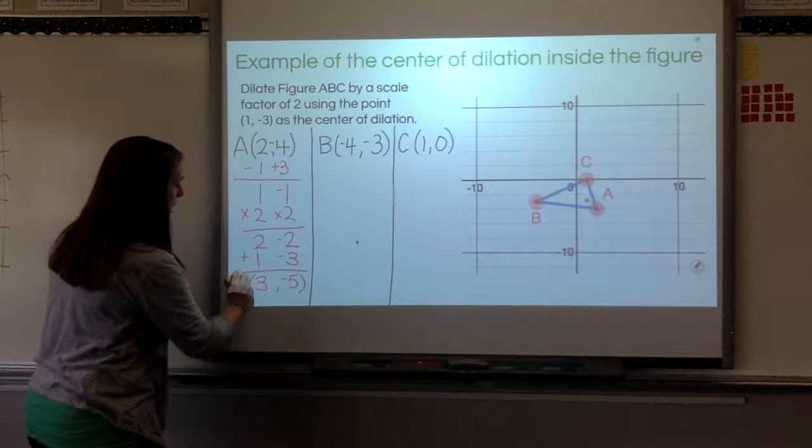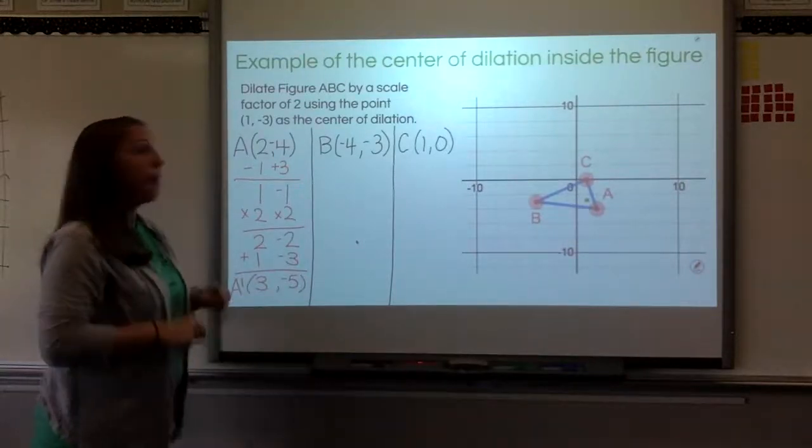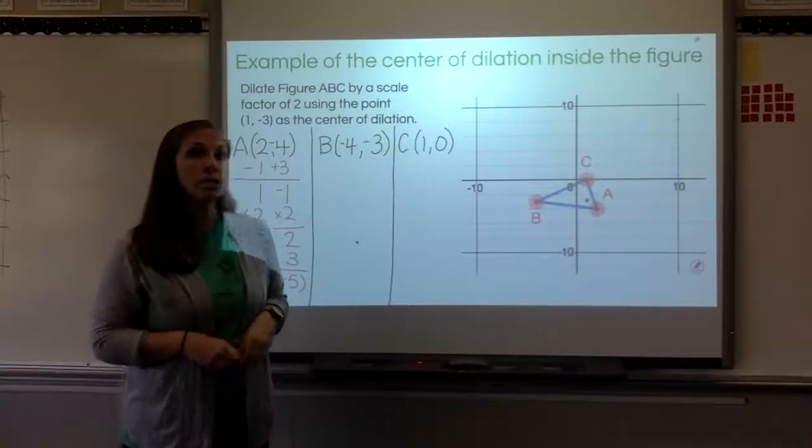So point A prime is at 3, negative 5. I'm going to go ahead and finish these two, and we'll check in in just a second.